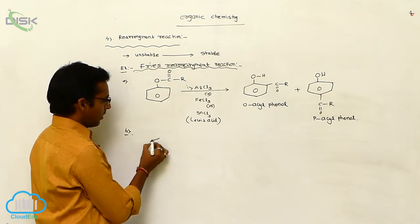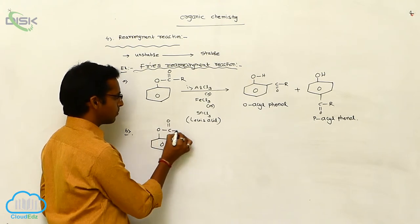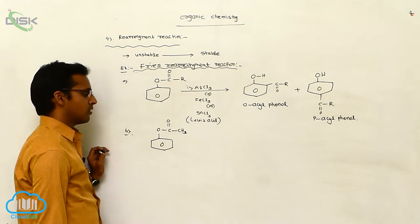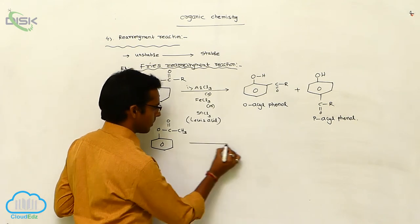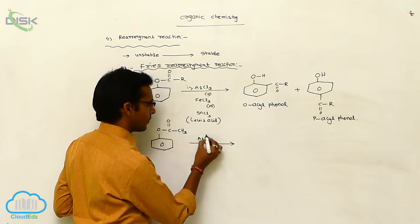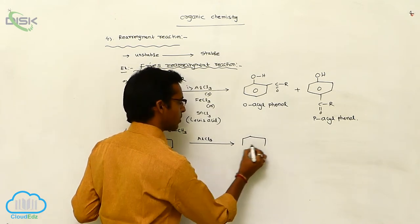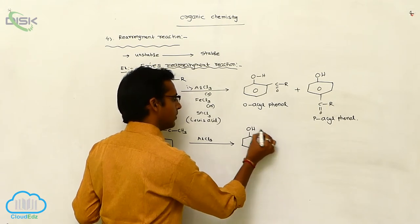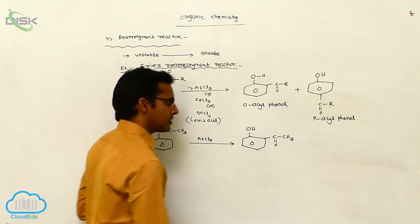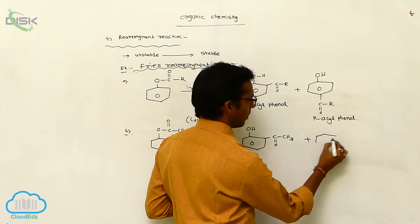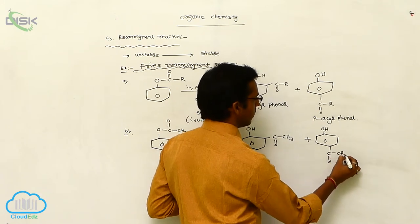Now applying this to different groups: if you consider R as a methyl group, in presence of a Lewis acid, it can again produce two types of products — one containing C double bond O-CH3 at the ortho position, and another containing OH and C double bond O-CH3 at the para position.